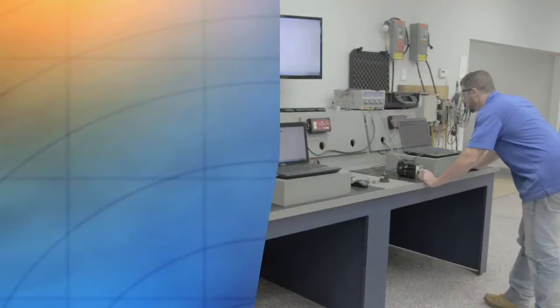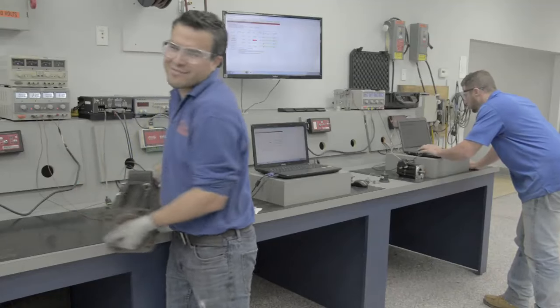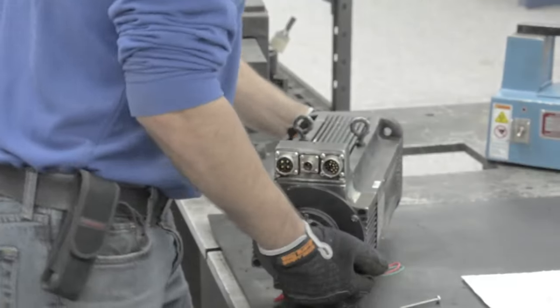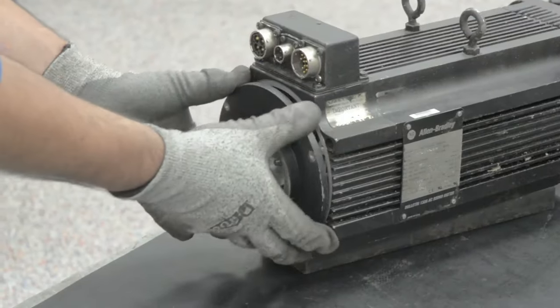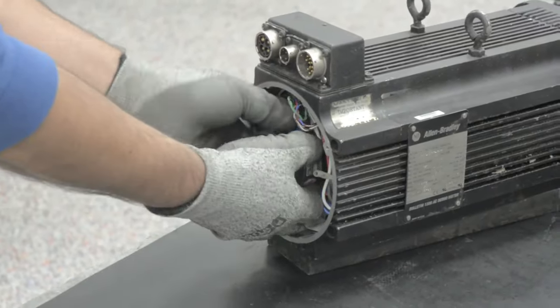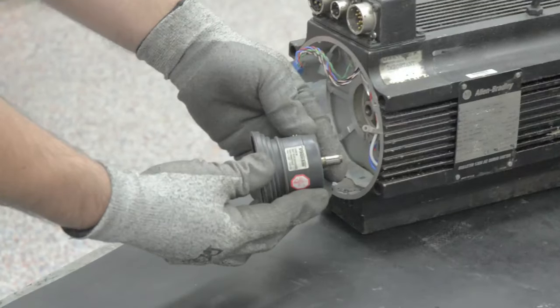Disassembly. Now that we have received a purchase order to approve the repair of this motor from the customer, we will disassemble the motor. First, we will remove the back plate. Second, we will remove the encoder housing and disconnect the wiring.